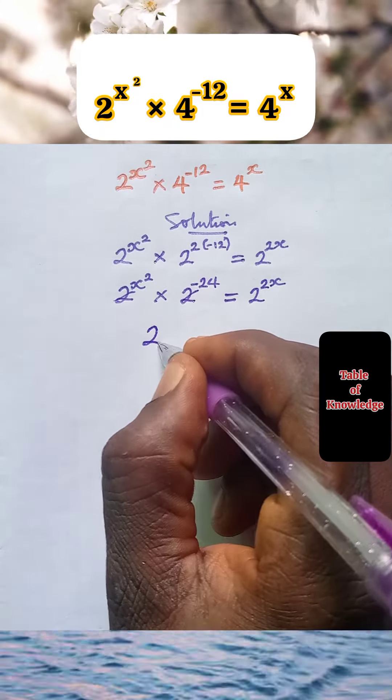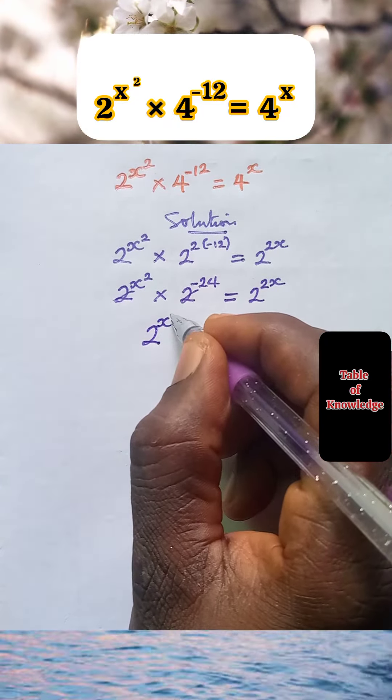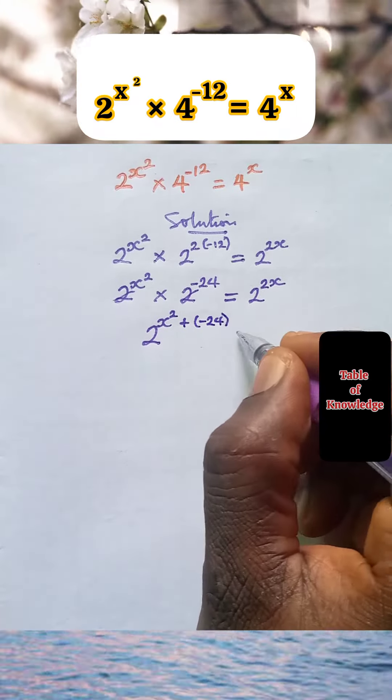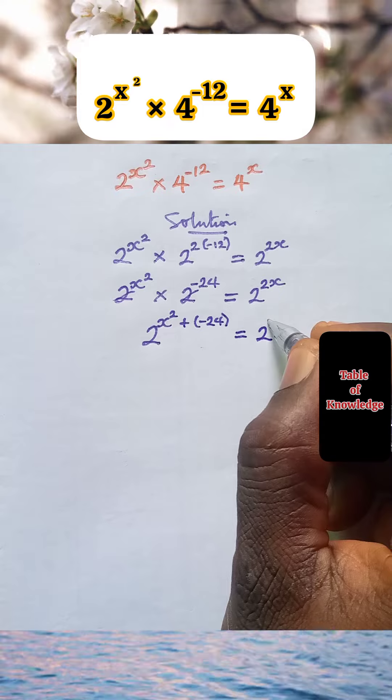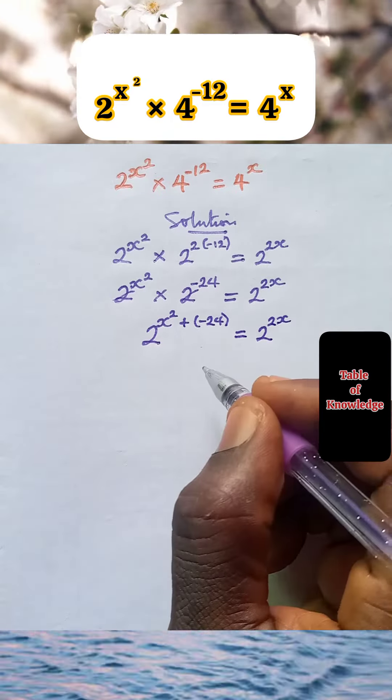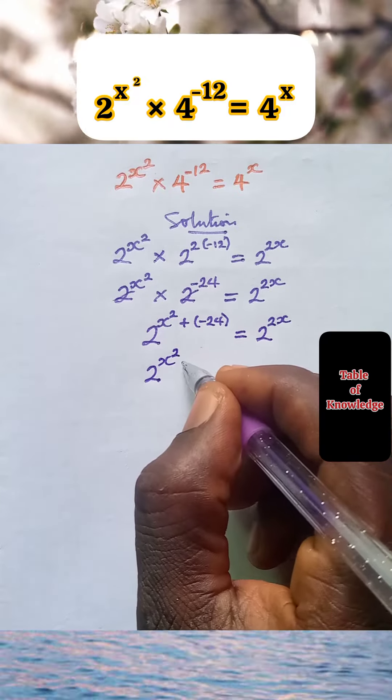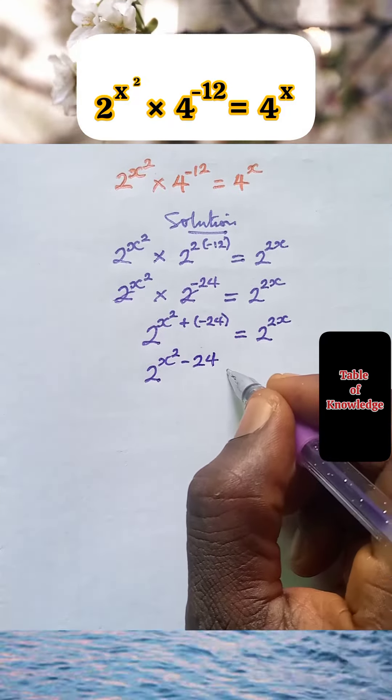x square, close in bracket, minus 24 equal to 2 raised to power 2x. Now we have 2 raised to power x square plus, times minus is minus 24.